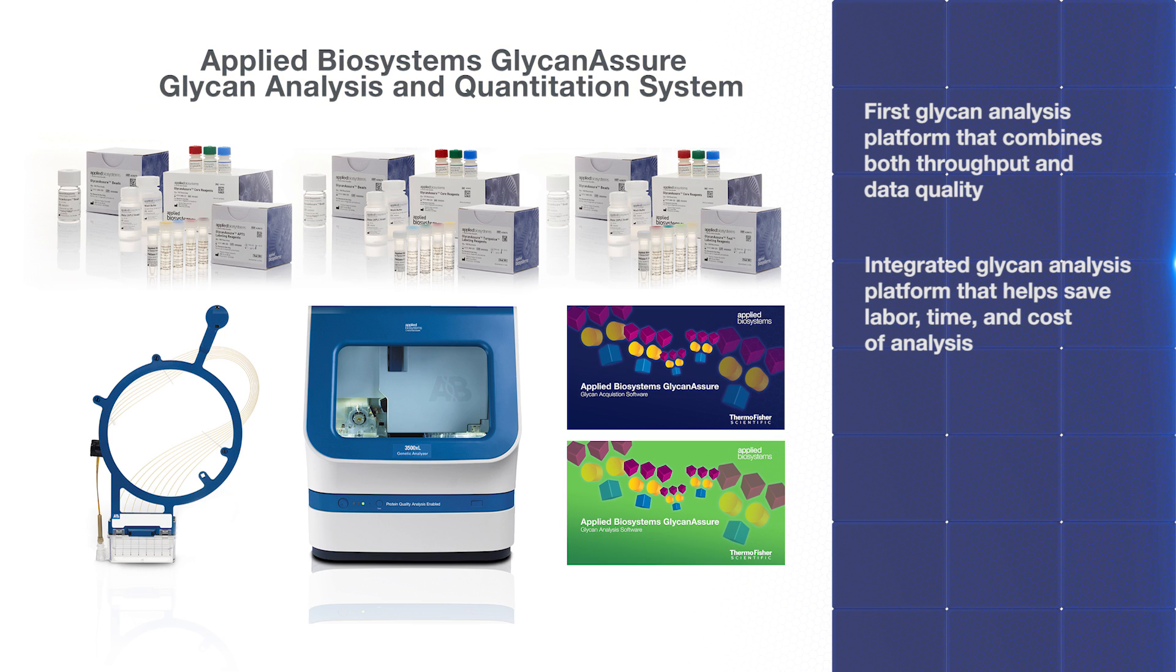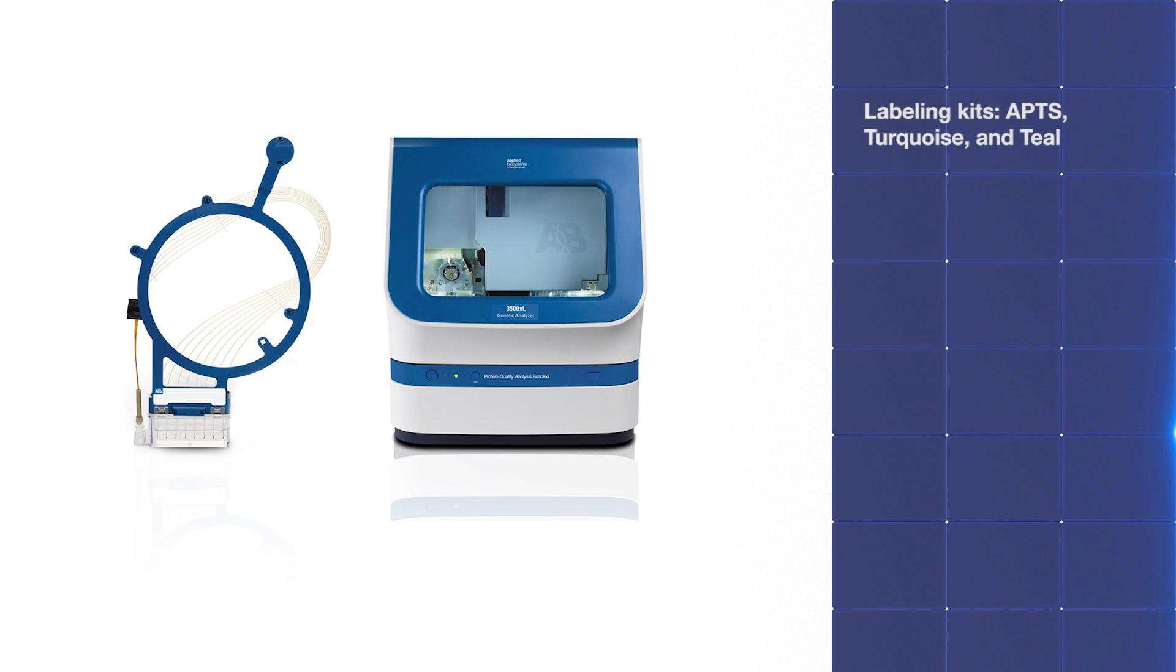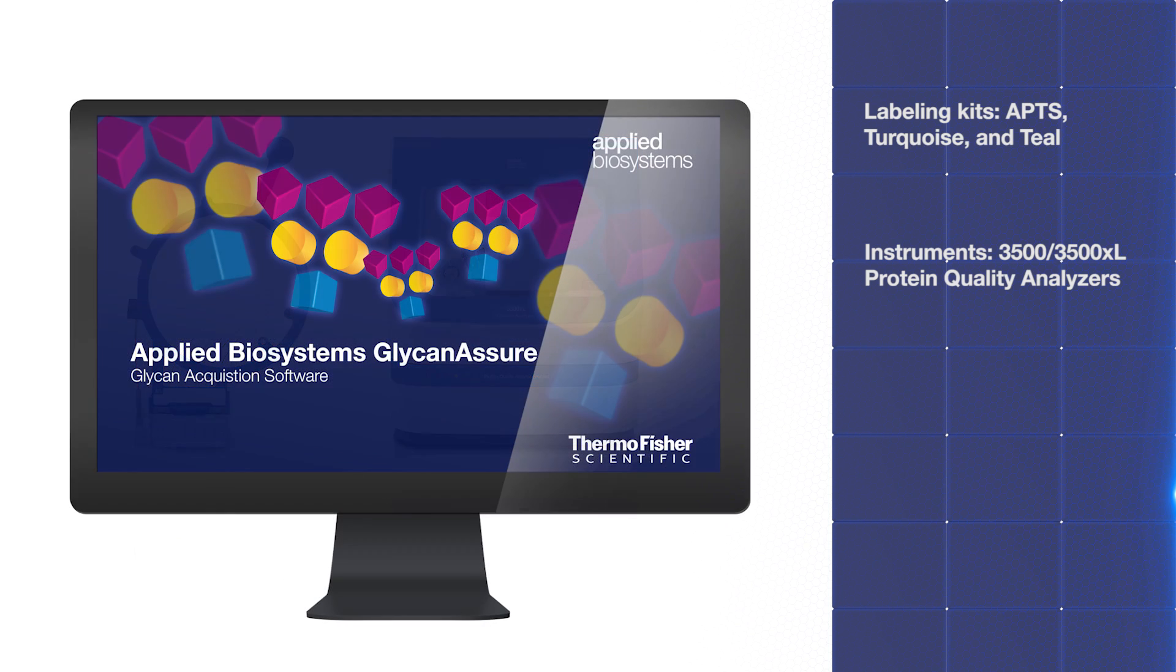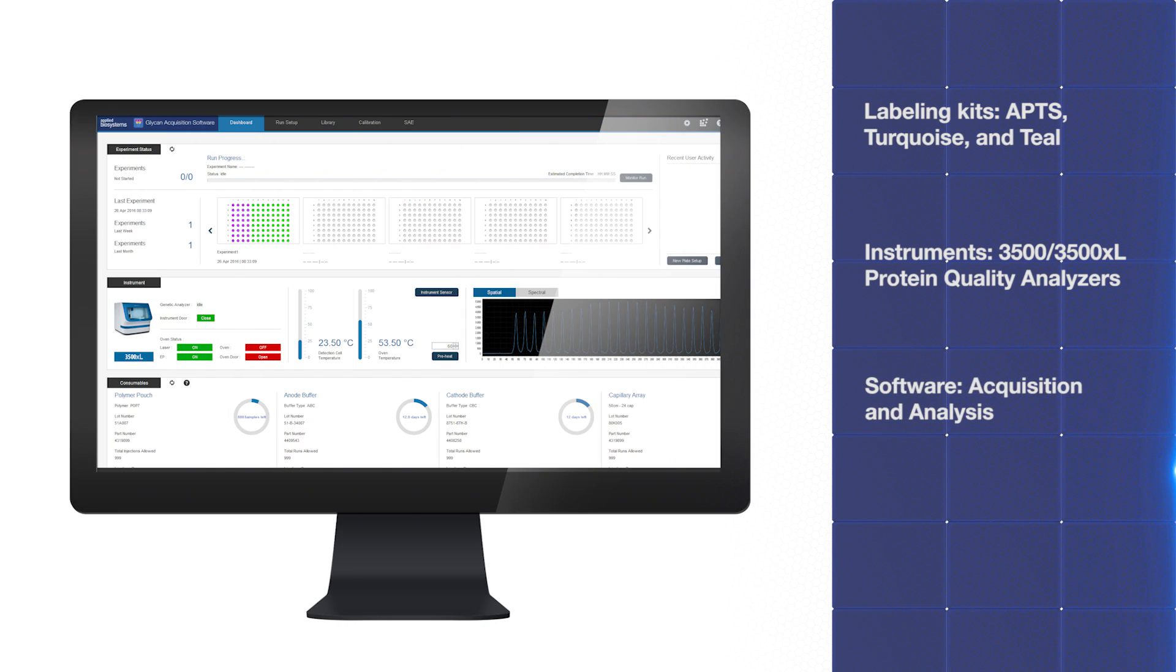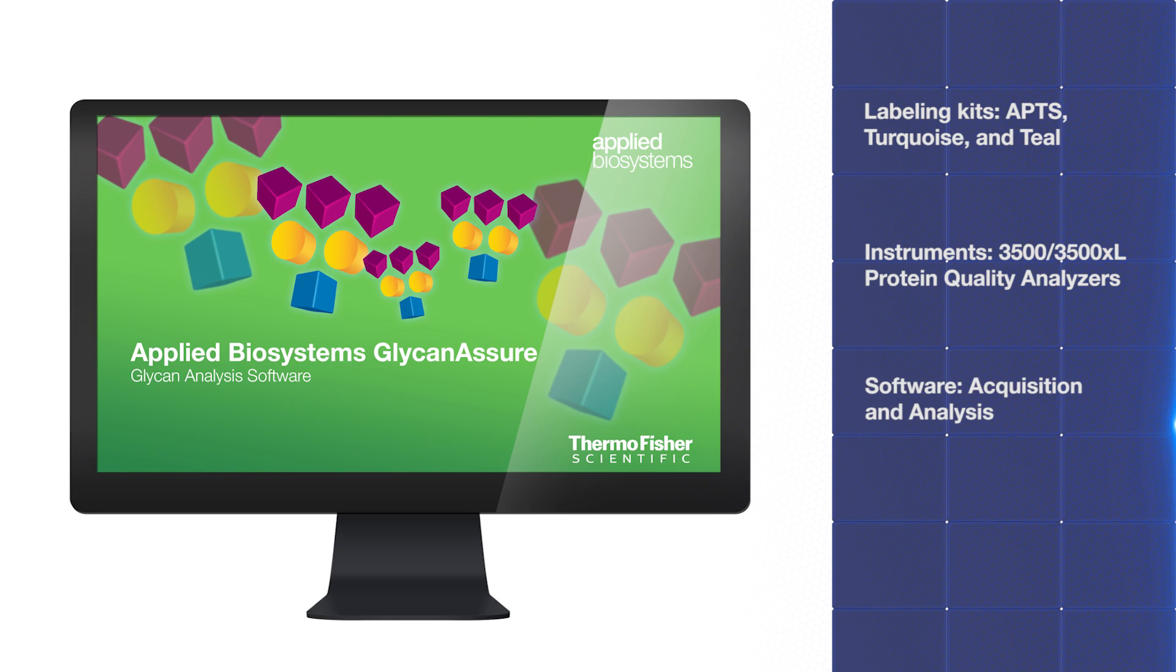The Glycan Assure system offers simple magnetic bead-based sample preparation with multiple glycan labeling fluorescent dyes for superior sensitivity and selectivity, multi-capillary CE instruments for high-throughput glycan analysis, and assay-specific software for fast data analysis and reporting.